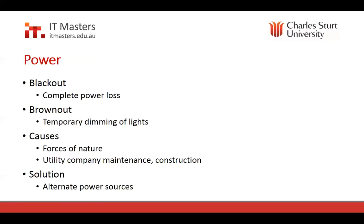Power is a big one — obviously if we don't have power, we don't have a data center and can't provide services. A blackout is a complete power loss. A brownout is where power levels drop for a short period — lights may dim, which might not be a big deal, but it could be a big deal for data systems because it disrupts their power. Data systems are not like a light bulb; if that happens to a server or disk system, it can cause damage or simply power it off.